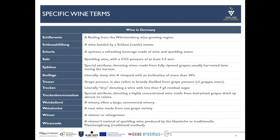Schillerwein is similar to Badisch Rotgold — a rosé-looking wine based on vinifying white and red grapes together. In this case, Schillerwein comes from Württemberg and not from Baden. Schlossabfüllung is a wine bottled by a Schloss, so on a castle — a bit more rare to find than Gutsabfüllung. Schorle is a typical German product, a Spritz — usually a mixture of wine and carbonated water. Sekt is a quite generic term in Germany for quality sparkling wine, produced from one or two fermentations either in the bottle or in the tank, and should have at least 3.5 atmospheres of pressure.